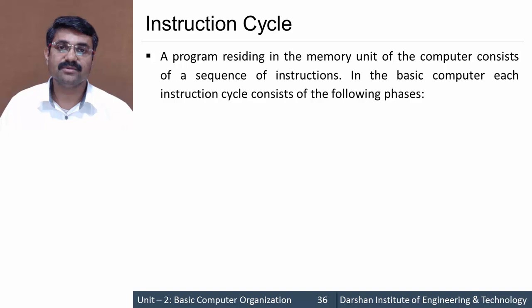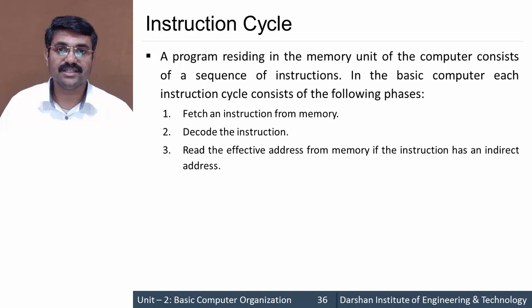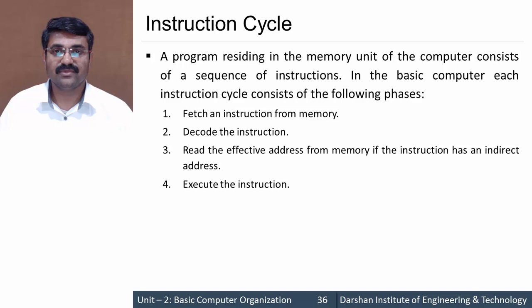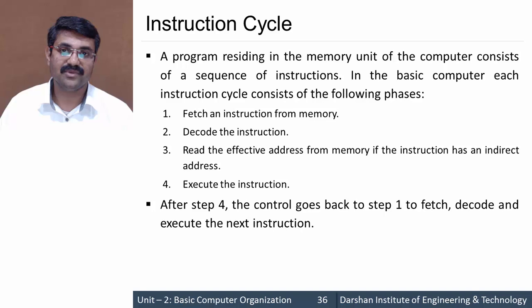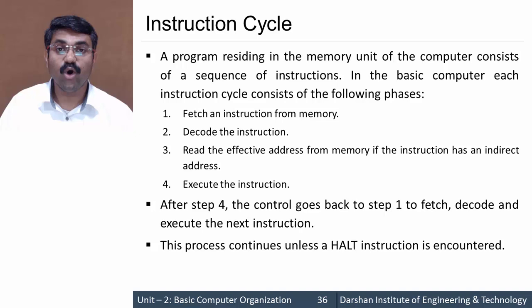First of all, the instruction would be fetched from memory, then it is decoded, then the effective address is read if the instruction has indirect addressing, and lastly it will execute the instruction. This cycle goes on for each and every instruction in a program — steps 1 through 4 are executed for all instructions. The cycle will stop when it encounters a HALT instruction for that particular program.